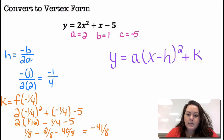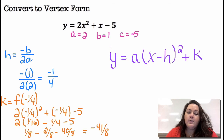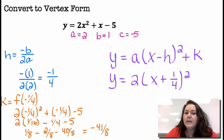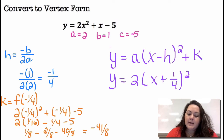So my vertex is negative one-fourth, negative 41 eighths. Now I'm going to plug it into vertex form: Y equals A times X minus H squared plus K. A is 2, H is negative one-fourth. So minus a negative makes it plus one-fourth, squared. Then plus K, but K is negative, so it's minus 41 eighths.